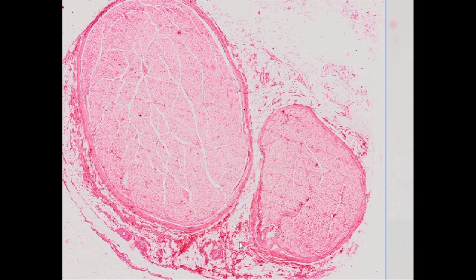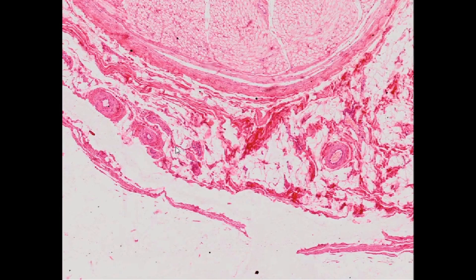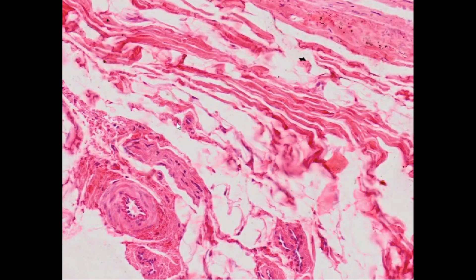The bundles of nerve fibers are fused into the nerve trunk by the epineurium, a layer of connective tissue containing multiple blood vessels that supply the nerve, as well as collagen and elastic fibers and fibroblasts. The nerves of the peripheral nervous system can be identified in a tissue specimen using antibodies against neuron-specific enolase (NSE).